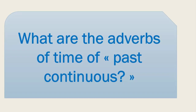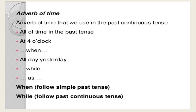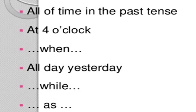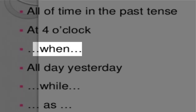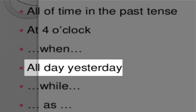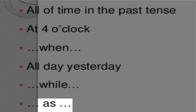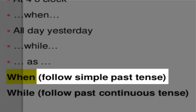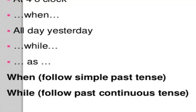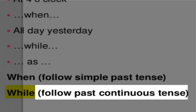What are the adverbs of time used with the past continuous? They include: at 4 o'clock, when, all day, yesterday, while, and as. Note: 'when' is followed by the simple past tense, and 'while' is followed by the past continuous tense.